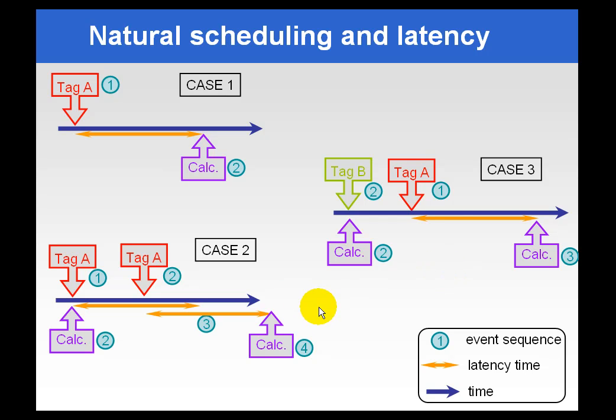This illustrates why, in a naturally scheduled tag, you do not see the calculations right at the trigger event. Even though they are timestamped that way, you do not see them until after the Latency Period ends.